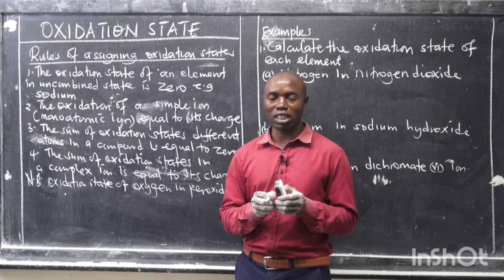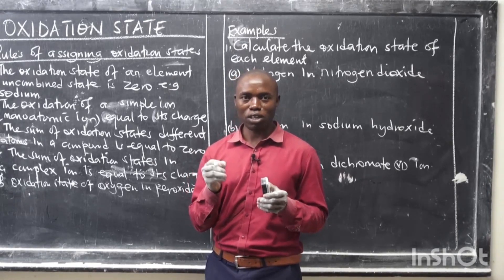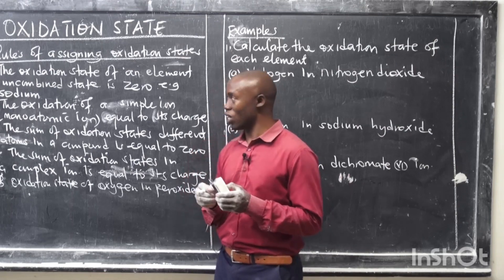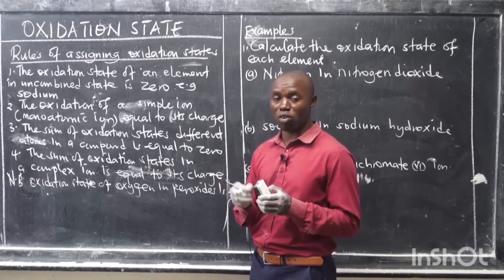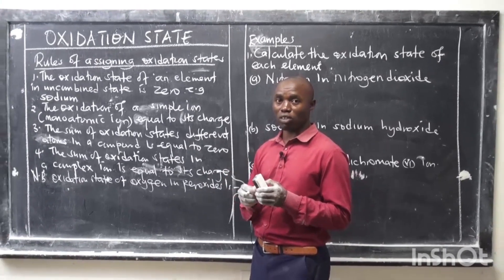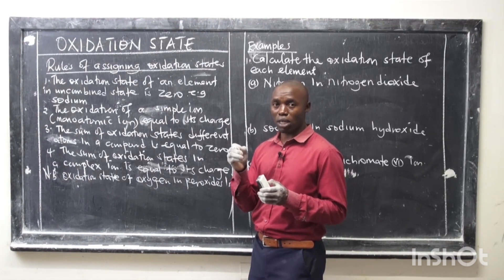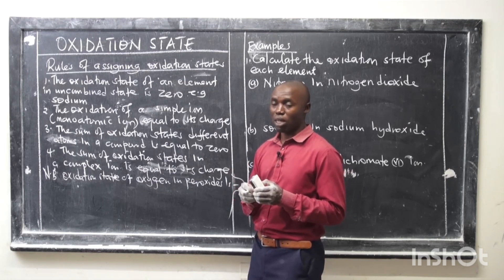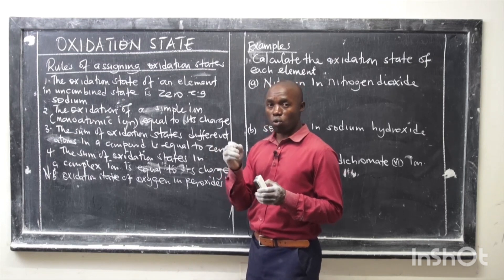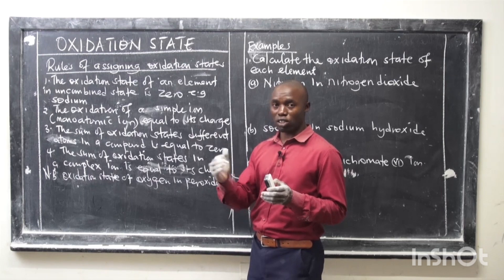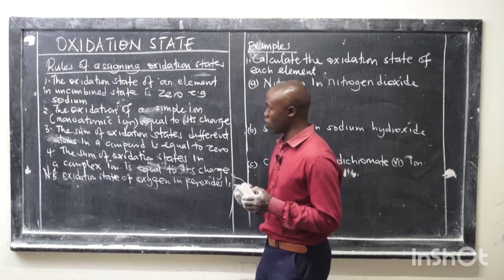When you are calculating oxidation states, make sure you put either a positive charge or negative charge depending on the answer you have got. Oxidation state is the number of electrons that any atom of any element has either gained or lost in forming a chemical bond with another atom. Or it can be the charge that would be left on any atom when you have removed the other atoms associated with that compound, each with its normal valence.